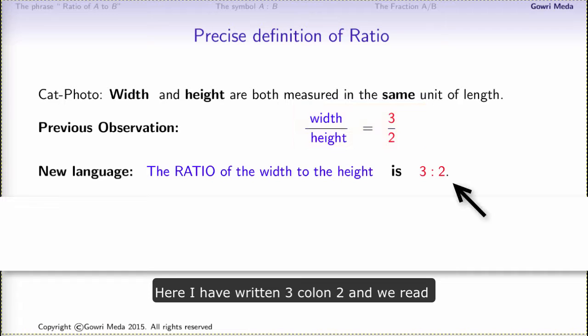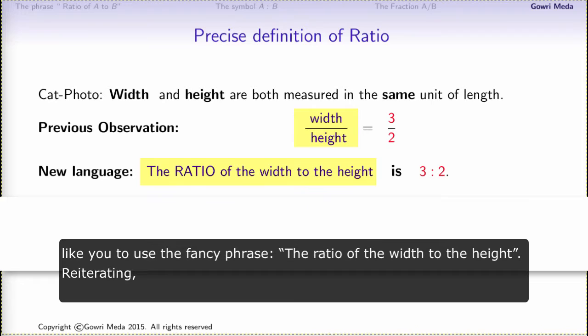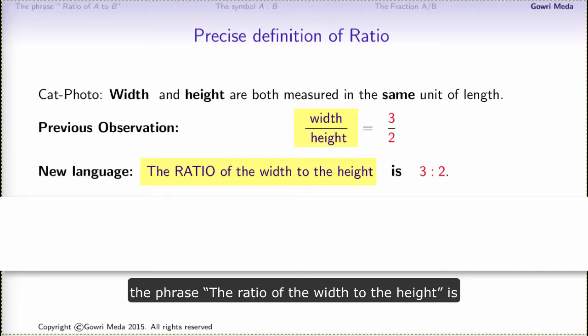Here I have written 3 colon 2 and we read this as 3 to 2. So what we were previously calling the fraction width over height, now I would like you to use the fancy phrase 'the ratio of the width to the height.' Reiterating, the phrase 'the ratio of the width to the height' is the same as saying the fraction width over height.